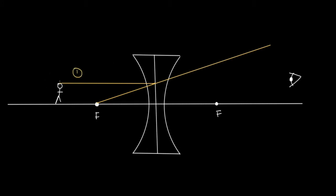Ray number two comes from the top of the man, and it goes through the focal point on this side of the axis. However, it doesn't actually travel along this part of the path. When it hits the lens, it starts to move parallel to the principal axis, like this.